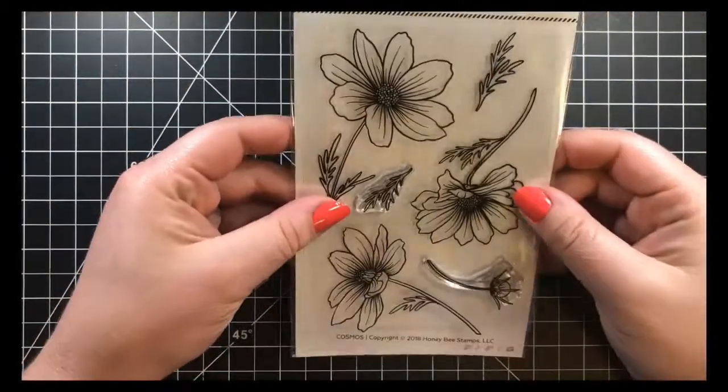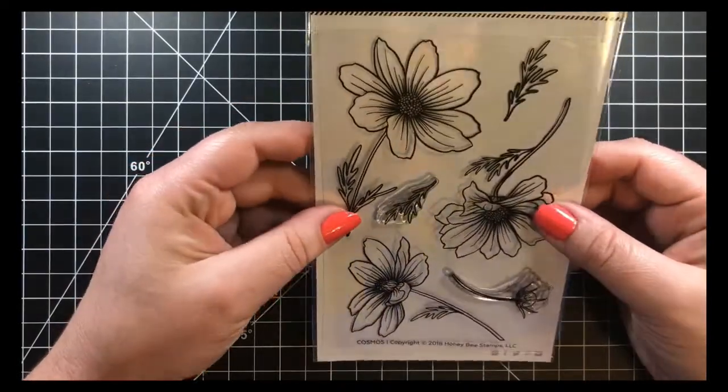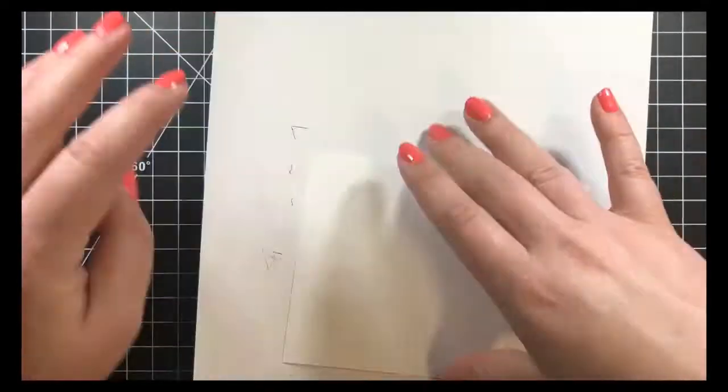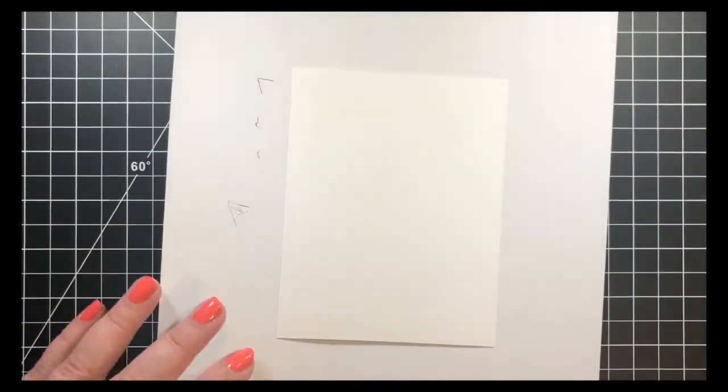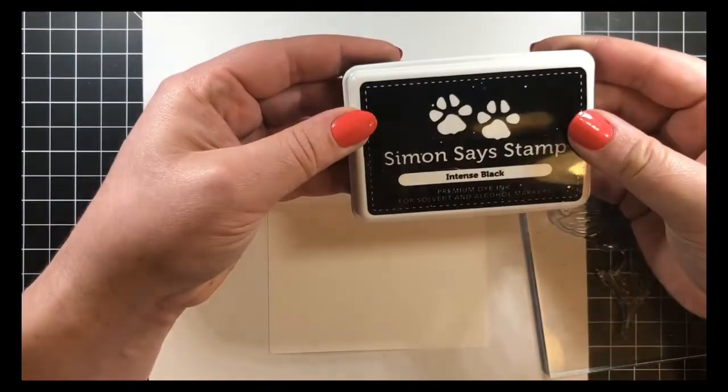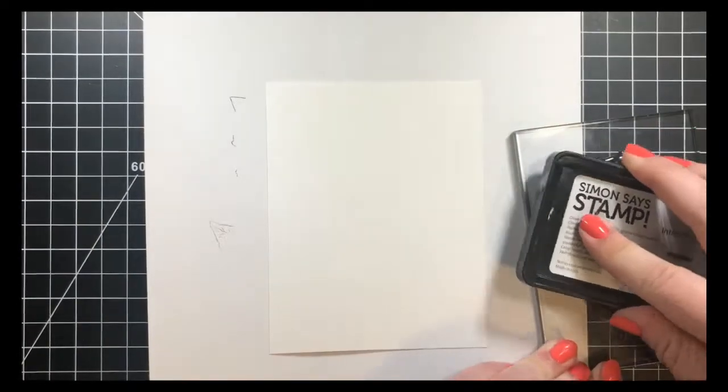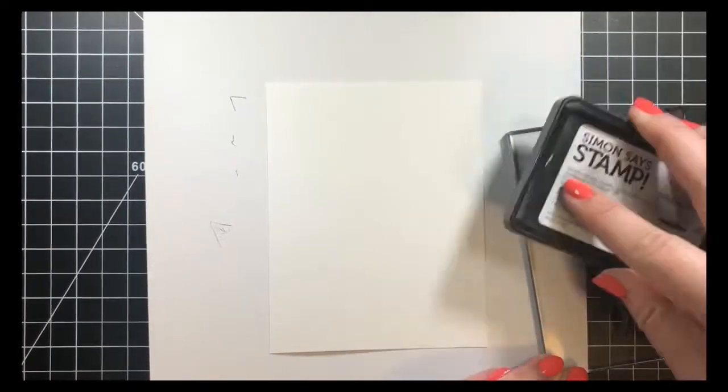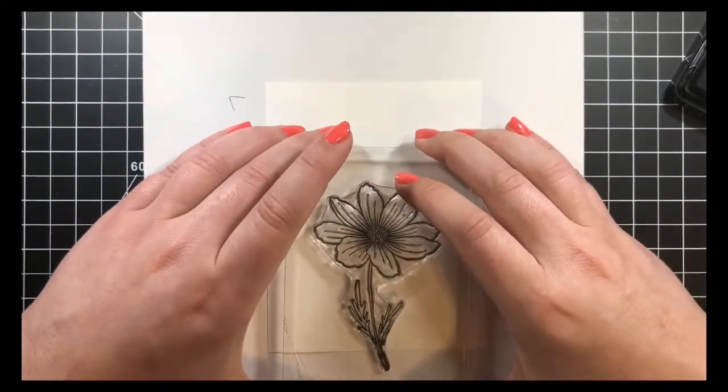Hey guys, it's Courtney and I am creating a black and white card using the Cosmos stamp set by Honeybee Stamps. I'm starting off with a piece of Neenah Solar White 80-pound cardstock cut down to four and a quarter by five and a half, and I'm stamping with Simon Says Stamp Intense Black ink.